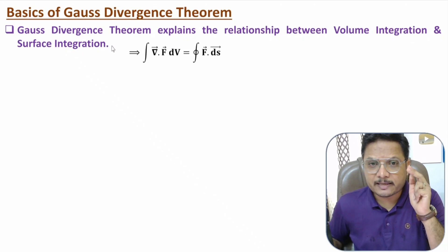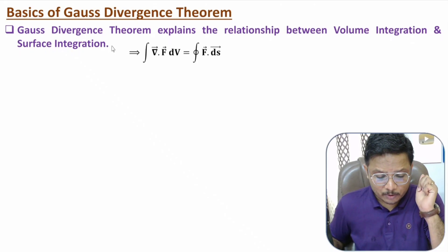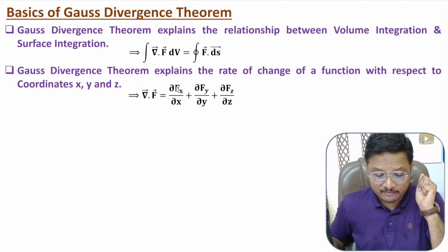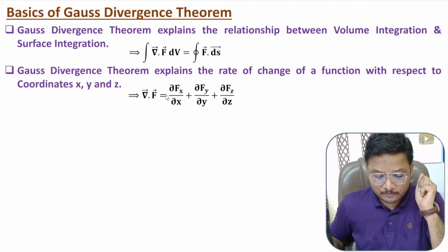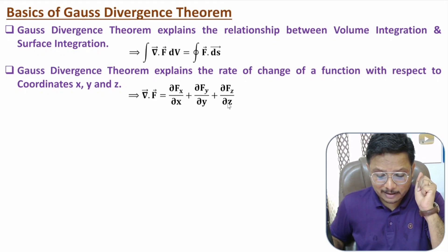Divergence of function explains the rate of change of function with respect to coordinate. So if you want to calculate del dot f, then that explains rate of change of function with respect to coordinates x, y and z. So if you have function f with x coordinate f_x, y coordinate f_y, and z coordinate f_z, then del dot f is the partial differentiation of the x coordinate of the function with respect to x, plus partial differentiation of the y coordinate with respect to y, plus partial differentiation of the z coordinate with respect to z. That is how divergence of function is defined — it explains rate of change of function with respect to coordinates x, y and z.